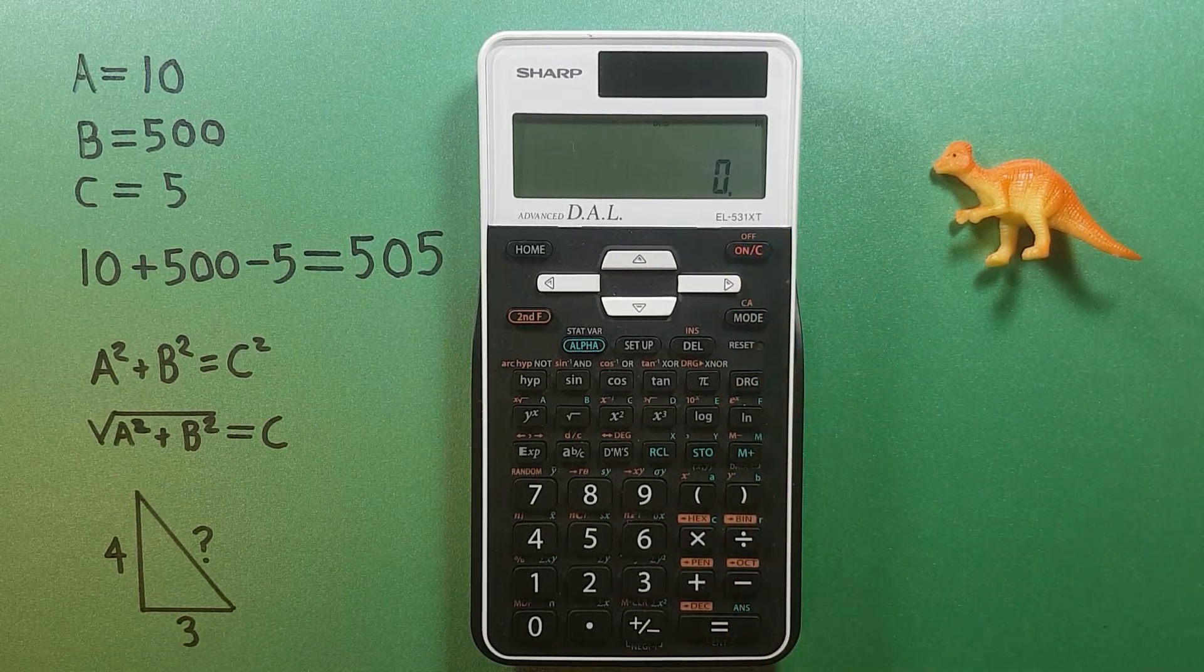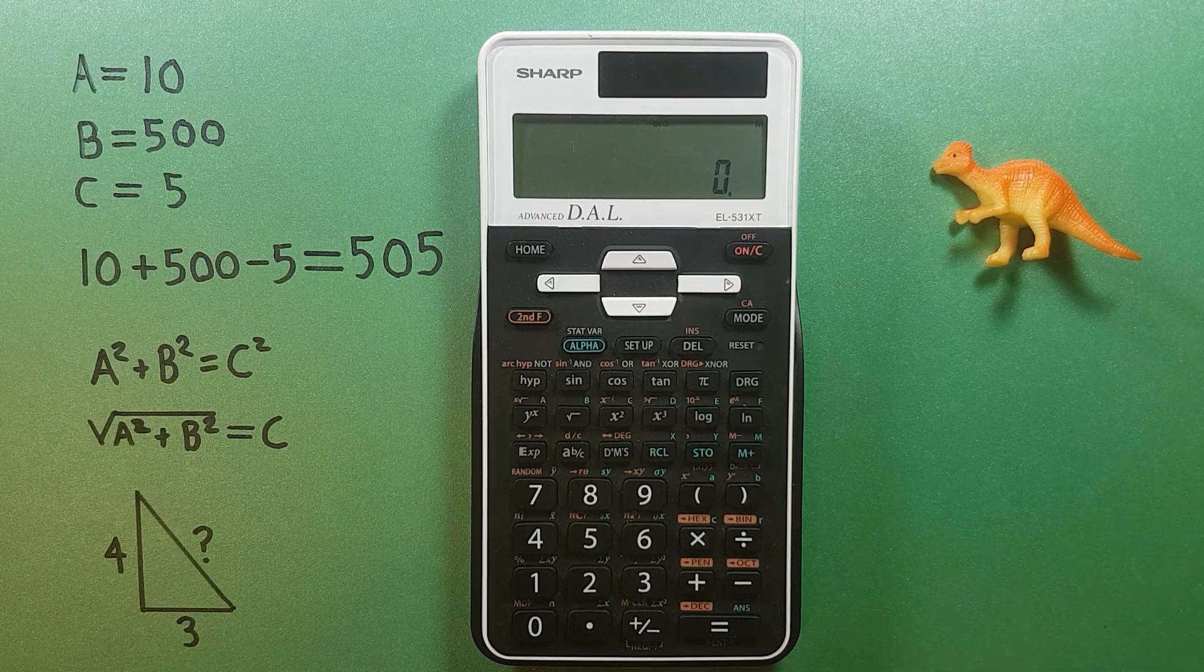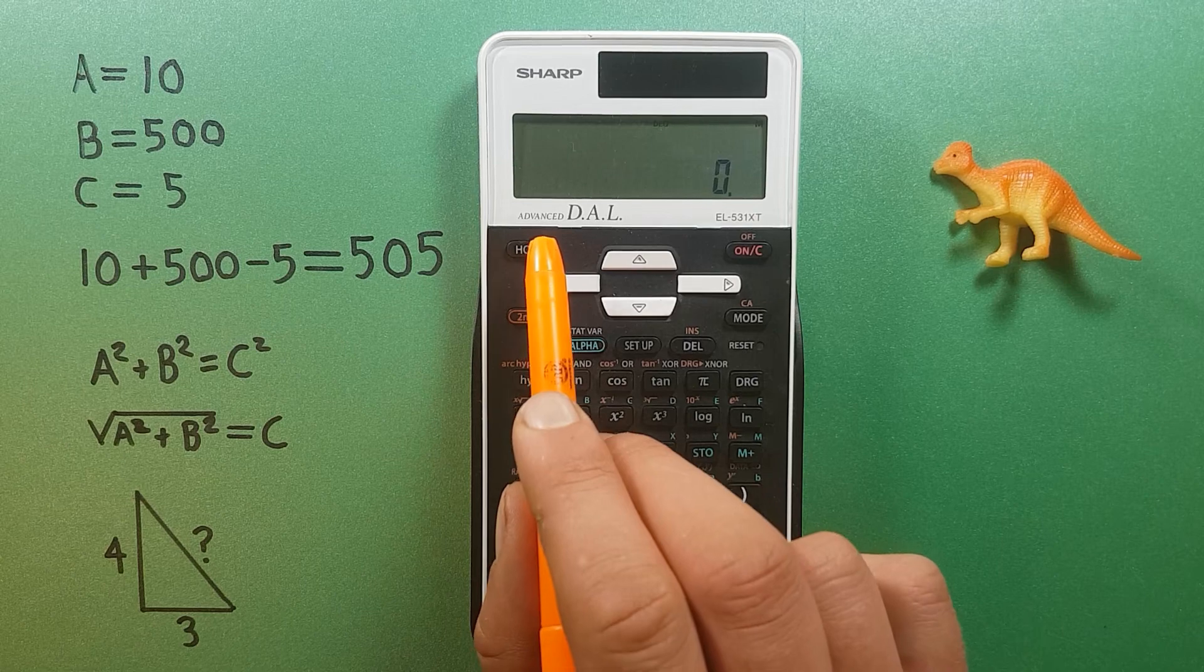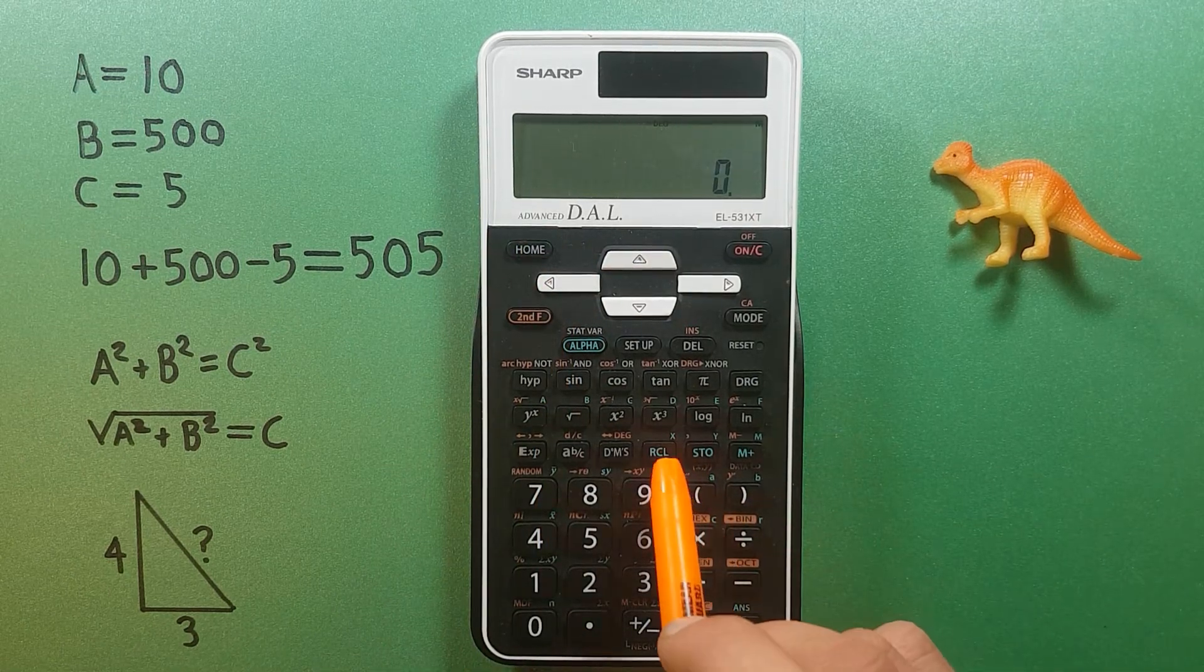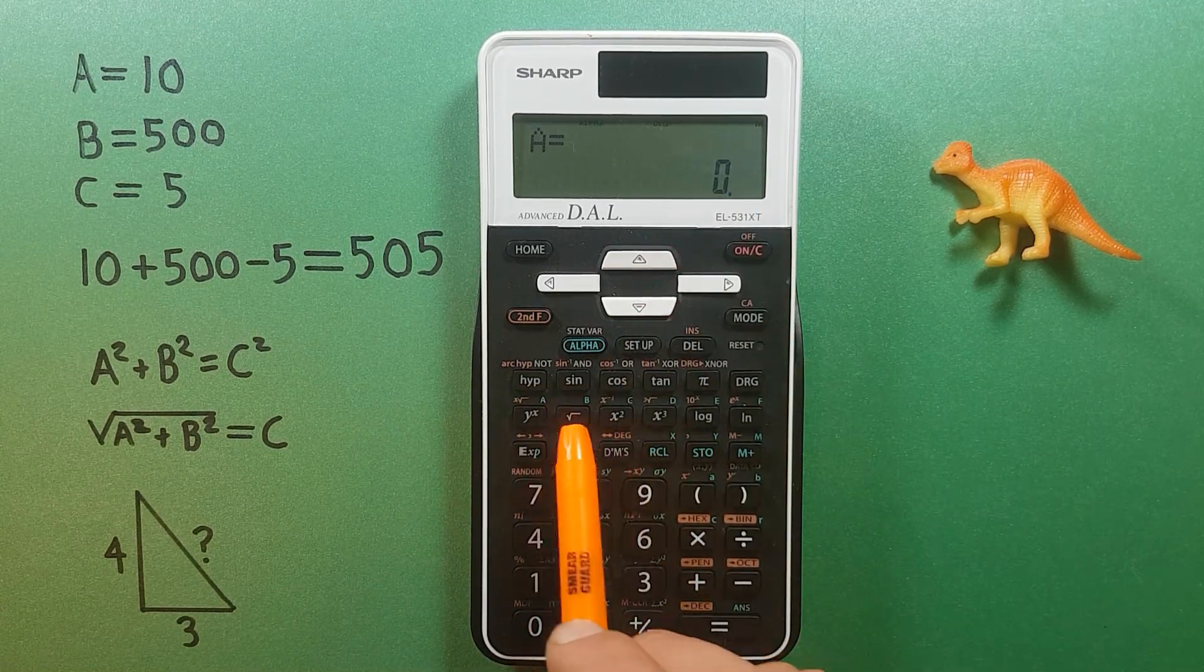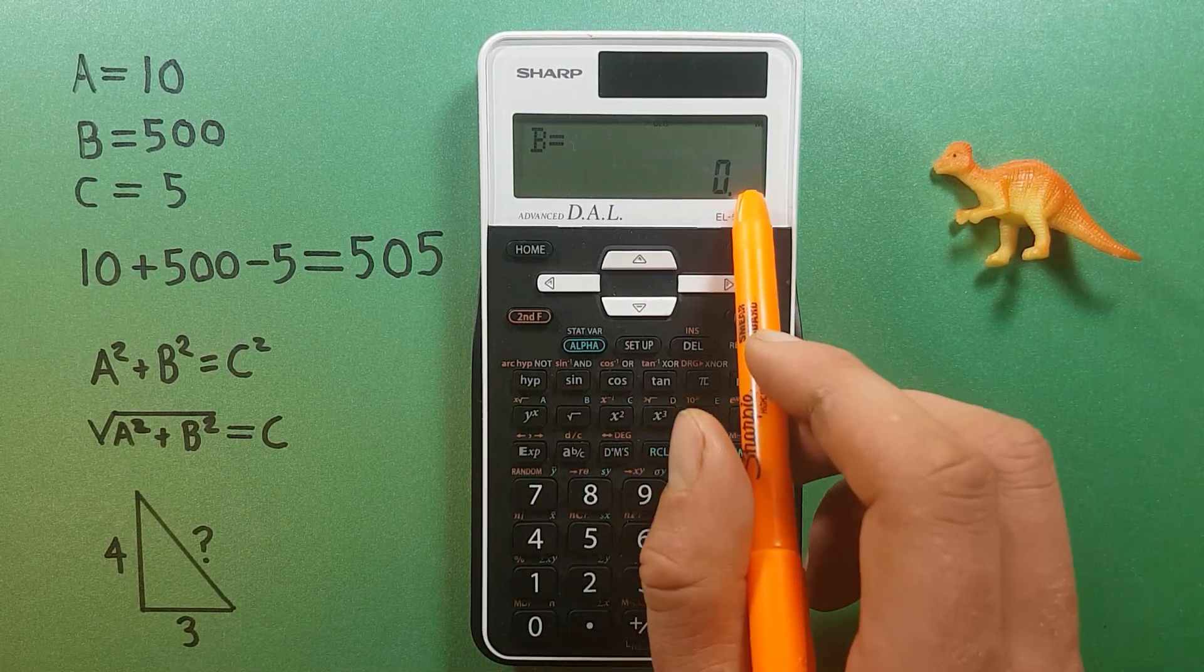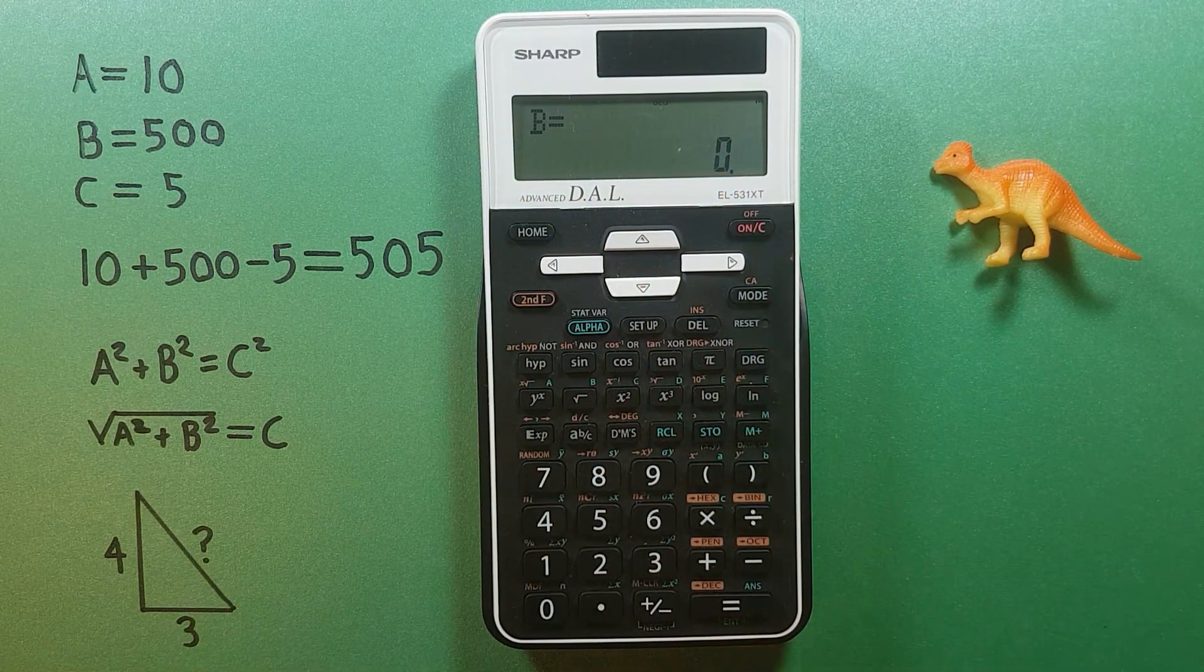Now what if we wanted to erase our known slots to make room for doing another formula? Well, we simply press the home key, and that will have cleared our storage slots. So if we try to recall A, we see it's zero. Recall B, still zero, so our save data has been erased.